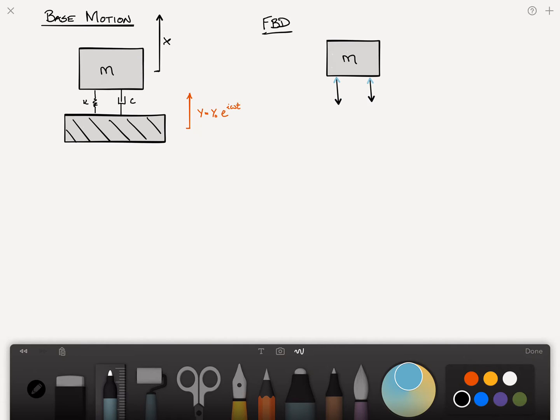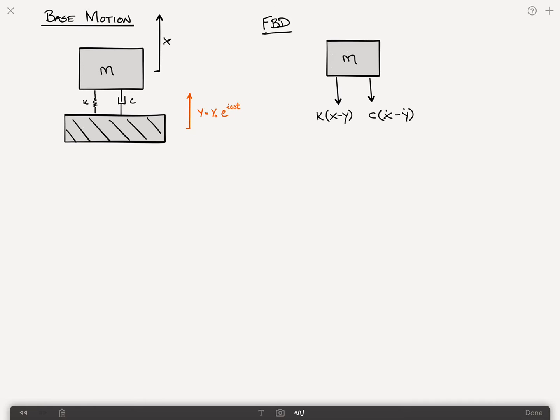The first force is due to the spring, and it is equal to k times, normally it would just be kx, but in this case it's kx minus y. And then of course we have the force due to the damper, which is equal to c times x dot minus y dot. Because I've drawn them in the negative x direction, I've used kx minus y, else you might ask, why isn't it k, y minus x? The answer is, I've drawn the arrows, the vectors, in the negative direction, so I'm going to subtract these.